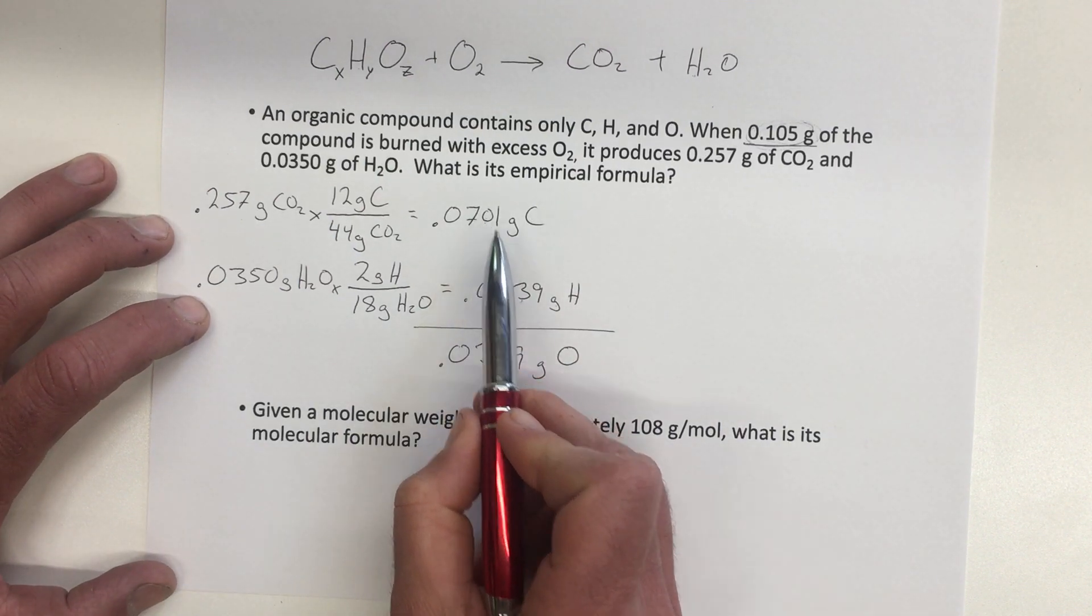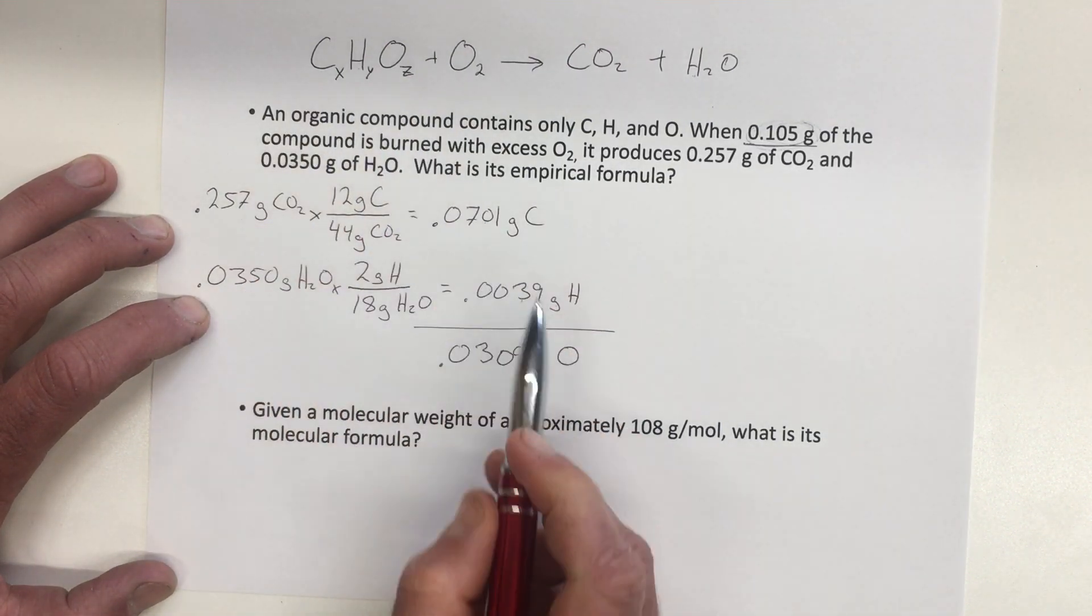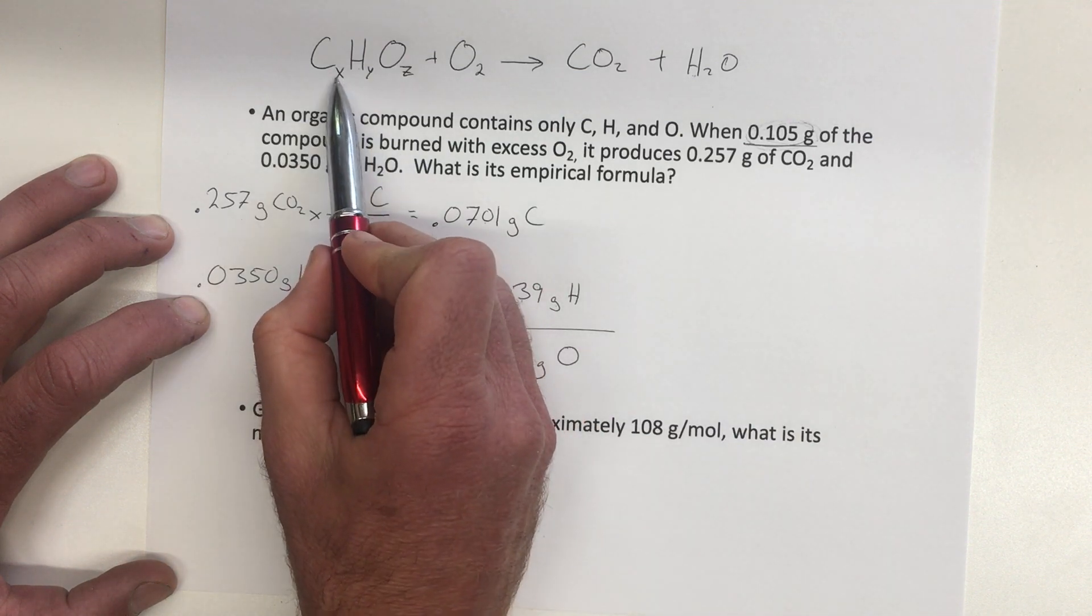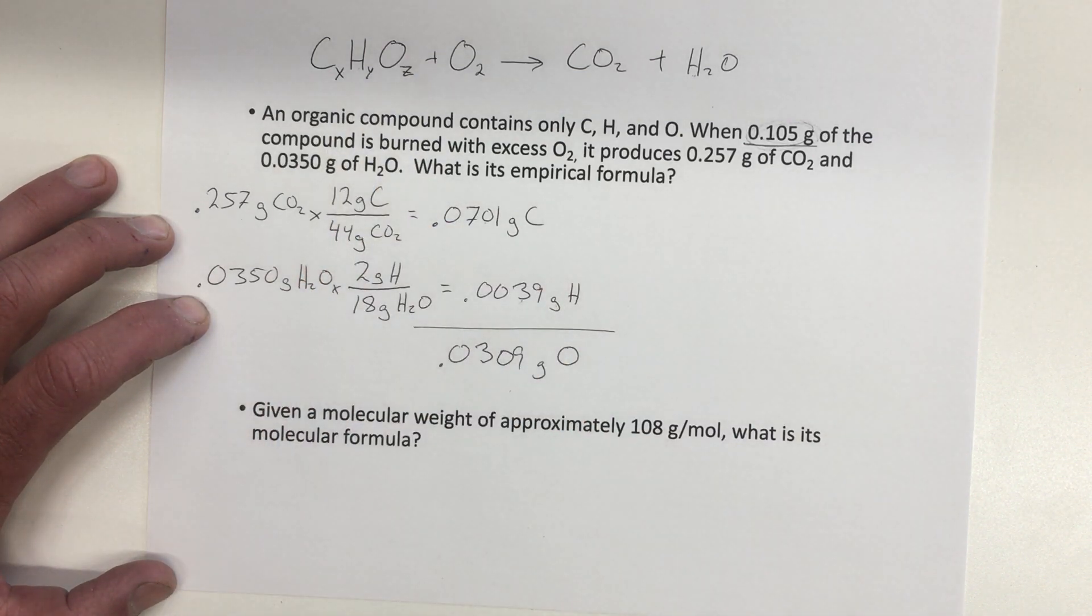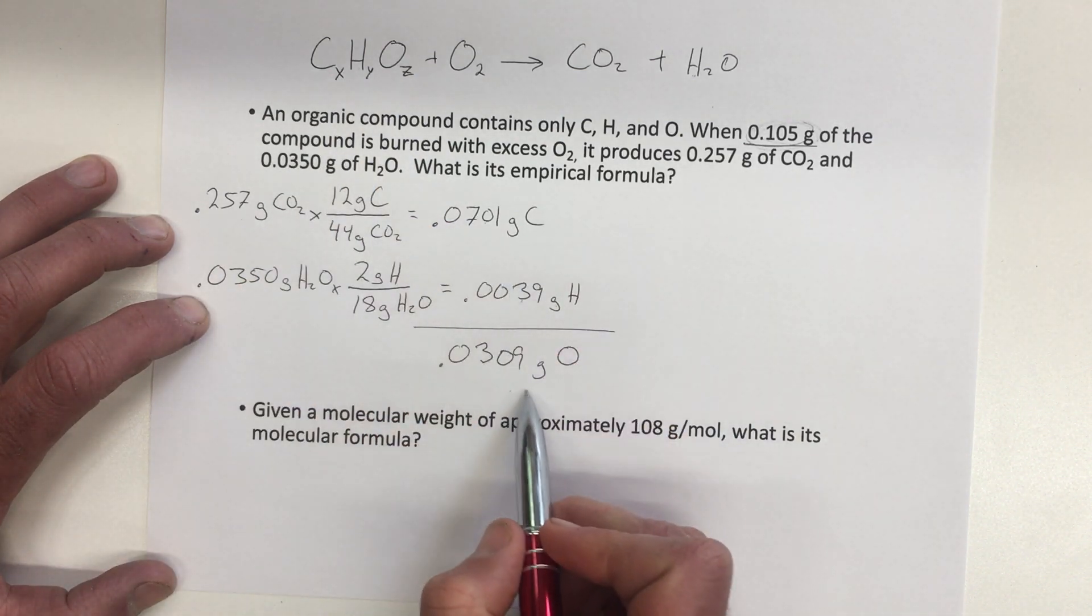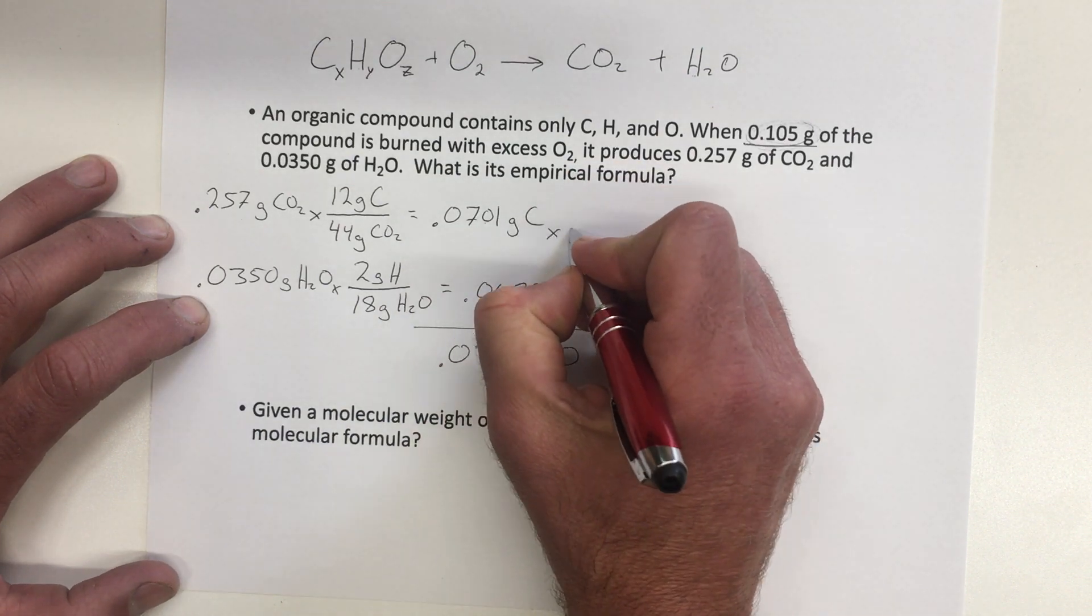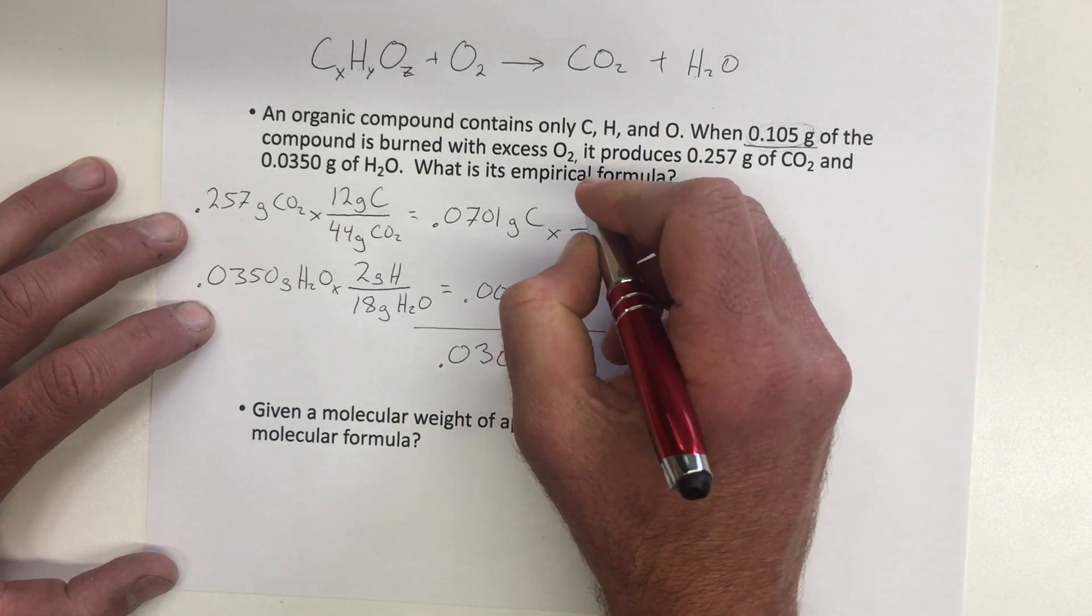Alright, well now we have the mass of carbon, hydrogen, and oxygen in this compound. But that's not the ratio we're going to use in that empirical formula. We need to change those all back into moles. So we're going to change each one of these back into moles using their molar masses.